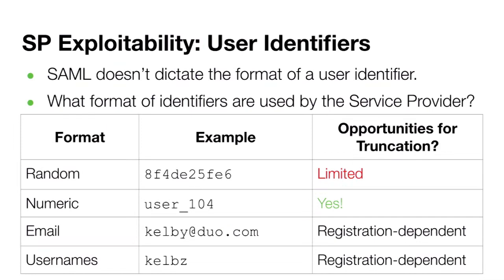Another SP-specific detail is how name IDs are handled and processed. The only requirement for user identifiers conveyed via name ID is that it uniquely identifies a specific user. Identifiers could be anything from user-selected usernames to completely random identifiers. Using random identifiers is probably unlikely to be truncatable to anything interesting, but incremental numeric identifiers could be exploitable — numbers like 104 could be truncated to become 1. Other identifiers such as email addresses and usernames are more dependent on how accounts are registered, and since account registration is often more a function of the identity provider, I'll discuss that more when we get to the IDP exploitability part of the talk.